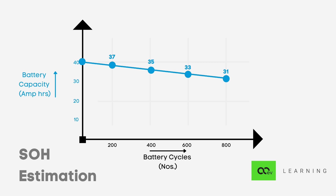There are other definitions of state of health as well. What we have seen in the graph is state of health by capacity — the effect of capacity fade over time. There is also another effect called state of health impedance, which can be calculated in a BMS algorithm. Impedance is essentially just a fancy word for resistance.